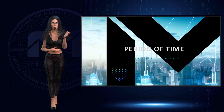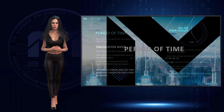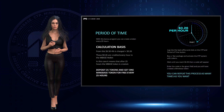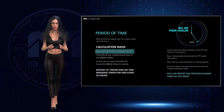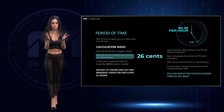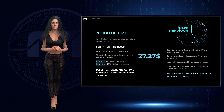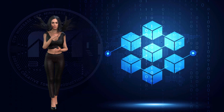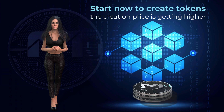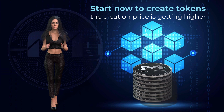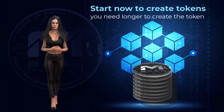The second option of the CTP system works over a period of time: you automatically receive 26 cents per hour. The same principle applies — every hour 26 cents are added up, and when you have reached the creation price of twenty-seven dollars and twenty-seven cents you will receive a Minebase token. The faster you start, the more tokens you can generate in a short time, as the creation price gets higher and higher.